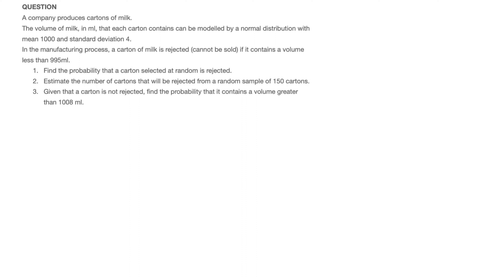In this video, I work through this exam-style question on normal distributions, in which we're told a company produces cartons of milk. The volume of milk in milliliters that each carton contains can be modeled by a normal distribution with mean 1,000 and standard deviation 4.